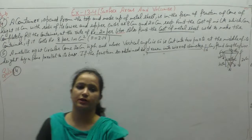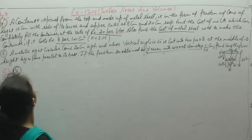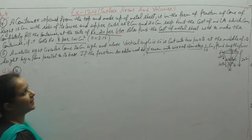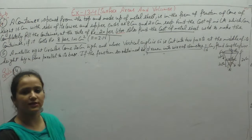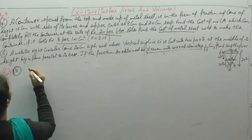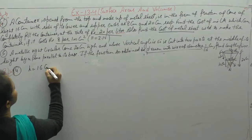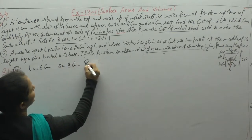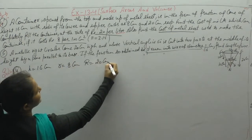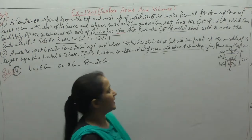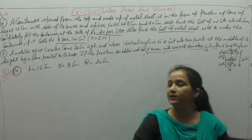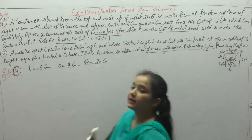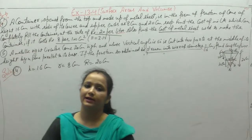Question number 4: A container open from the top, made up of metal sheet, is in the form of a frustum of a cone of height 16 cm. The radius of its lower and upper ends are given. We need to find the cost of milk which can completely fill the container — that is, how much milk fills the container.